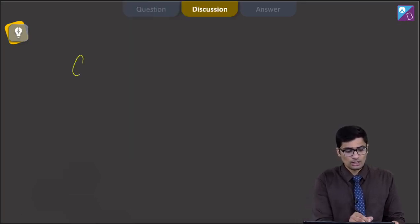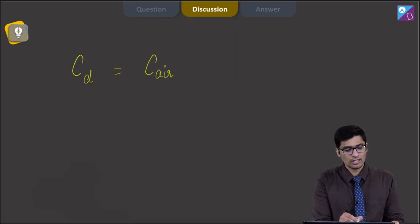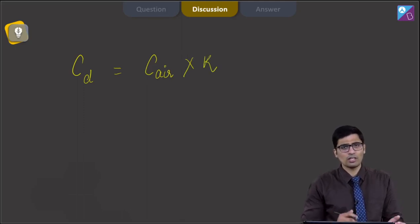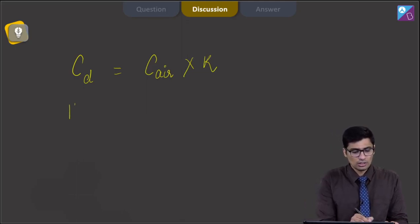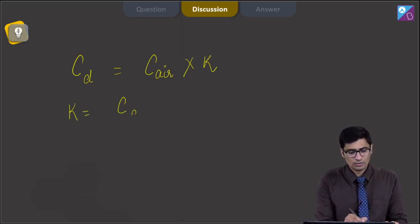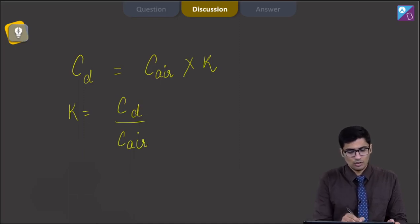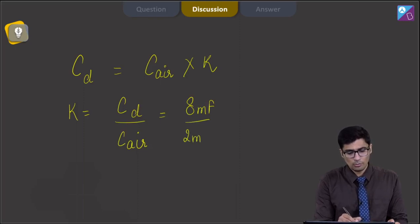Dear students, the capacitance with dielectric is equal to capacitance with air medium multiplied by the dielectric constant. This is the fundamental formula we will be using to solve this question. Therefore, k can be written as capacitance with dielectric divided by capacitance with air as medium. On substituting the values, this will be 8 millifarad divided by 2 millifarad, giving us a value of 4.